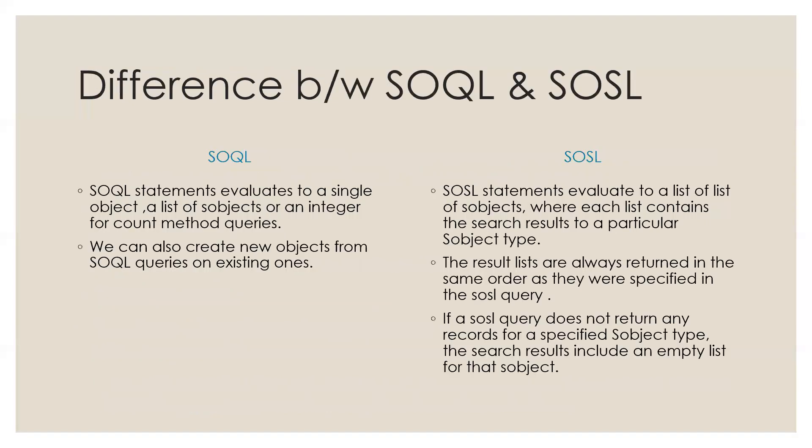Difference between Sokol and Soso. Sokol statements evaluate to a single object, a list of S-objects, or an integer for count method queries. We can also create new objects from Sokol queries on existing ones. Soso statements evaluate to a list of list of S-objects, where each list contains the search results for a particular S-object type. The results are always returned in the same order as they were specified in the Soso query.